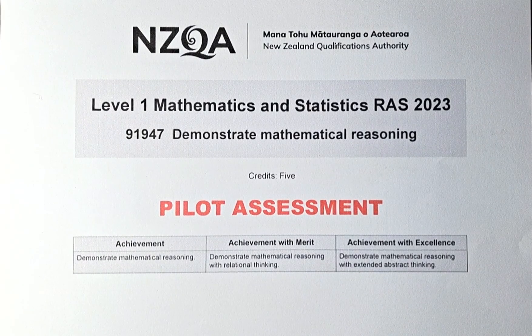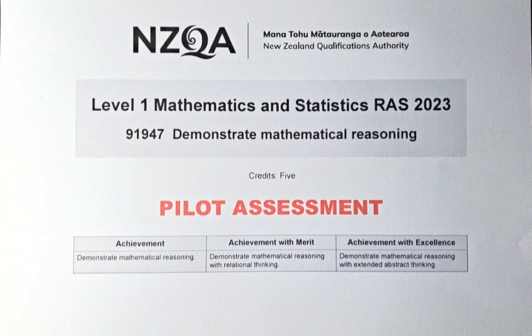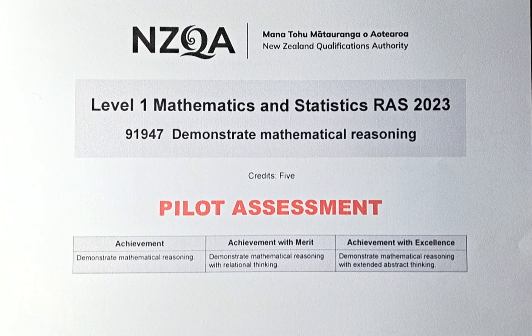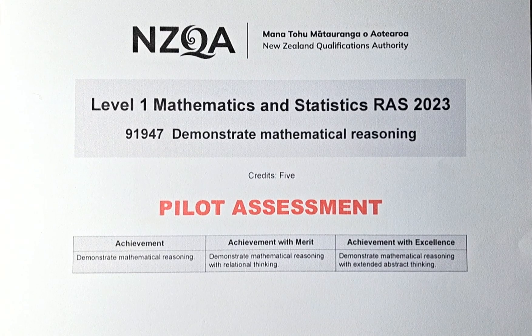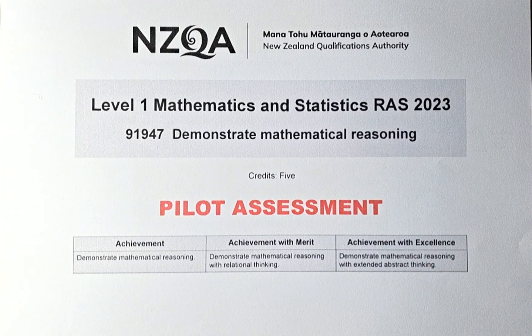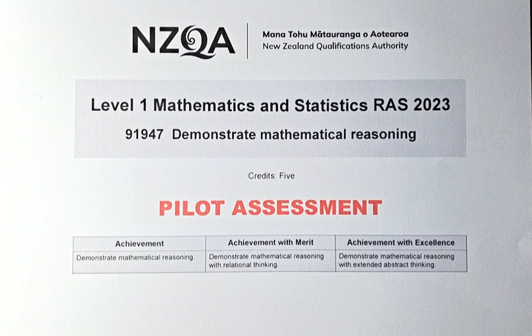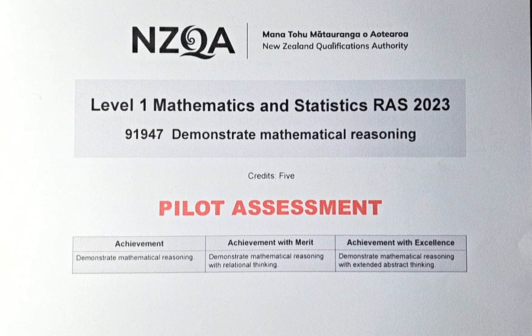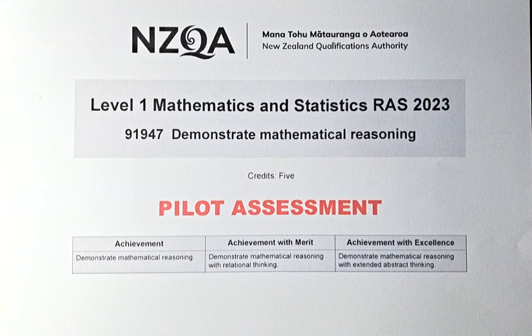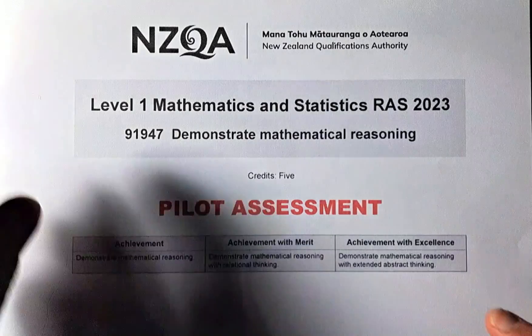Good day and welcome to the second video of the NCEA Level 1 Demonstrate Mathematical Reasoning. The paper number is 91947 and this is a five credit paper. This is a pilot assessment because 2024 is the first year this standard will be offered. So without further ado, let's do question 1b of this paper.